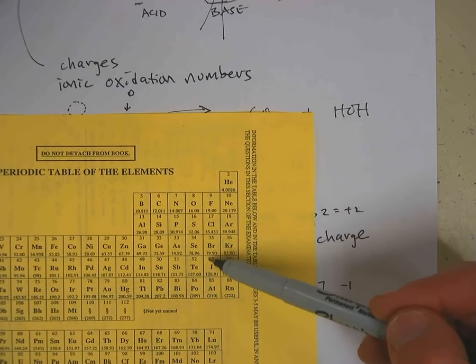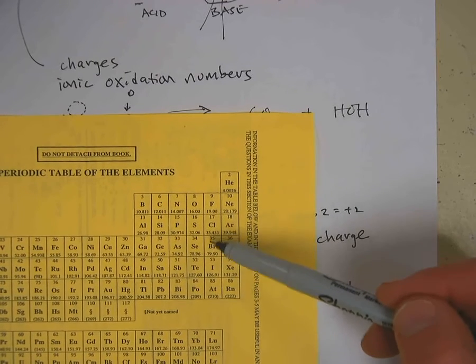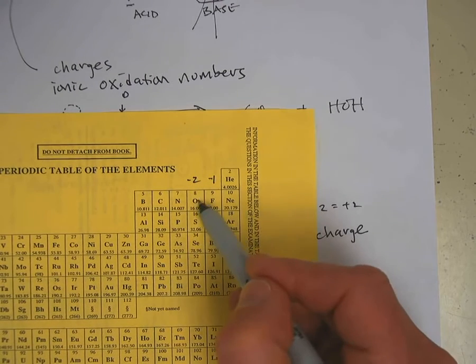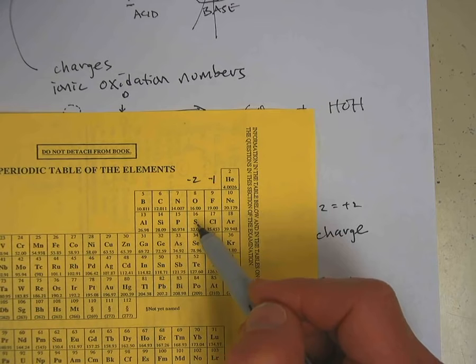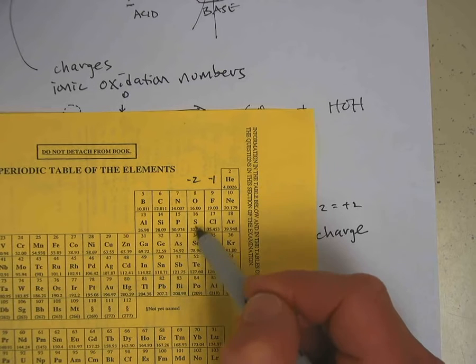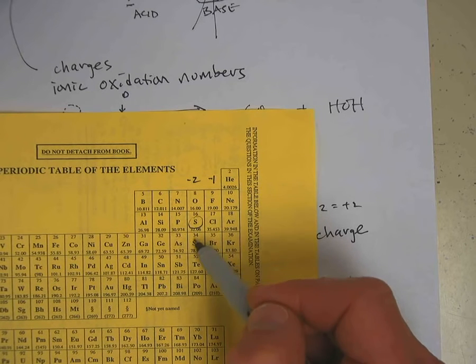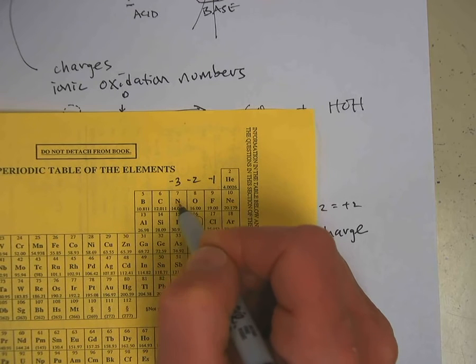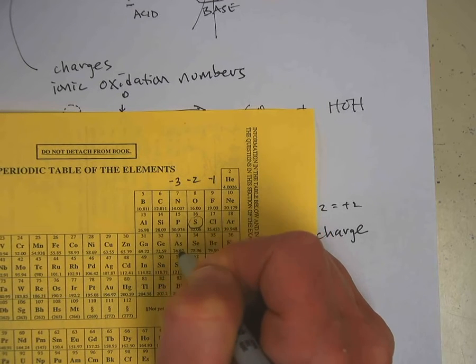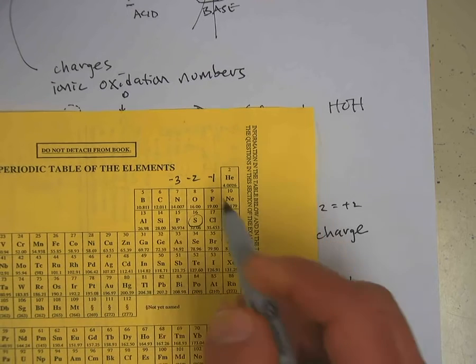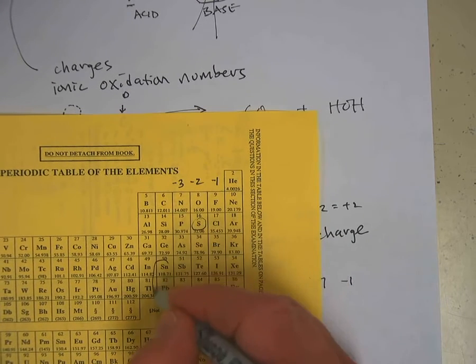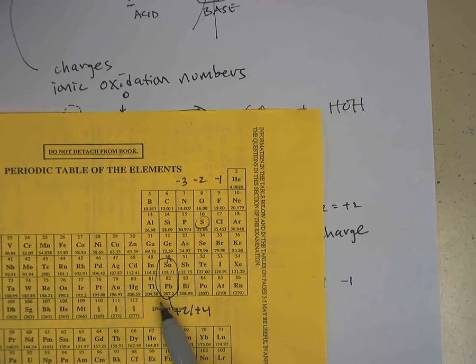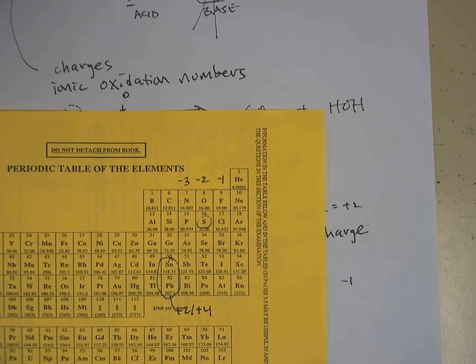This group right here, oxygen, of course, is almost always minus two. And when in doubt, you can guess that these are minus two, but sulfur breaks that rule a lot. This group, minus three for nitrogen, usually, but nitrogen breaks that rule quite a bit, especially in polyatomic ions. Same thing with phosphorus and arsenic. So you have to be kind of careful with that. Tin and lead, almost always plus two or plus four. Generally, you see them be plus two, and those are some good educated guesses.